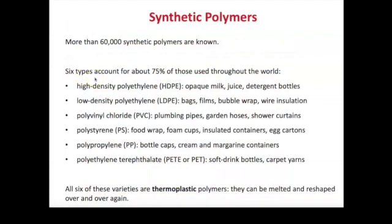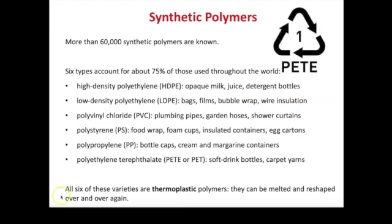There are only six, called the Big Six, that account for 75% of the polymers used everywhere. What all six have in common is that they're thermoplastic — they can be melted and shaped — which leads to the possibility of recycling. These plastics have both acronyms and recycling numbers, similar to how each element on the periodic table has a symbol and an atomic number.